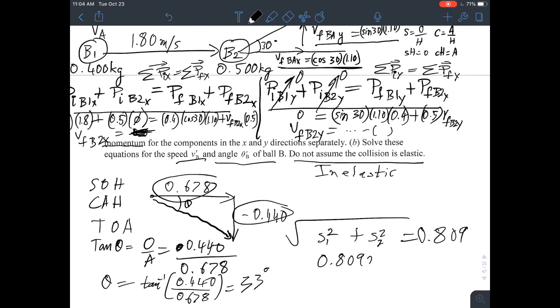So you can say, hey, it's 0.809 meters per second at 33 degrees below the positive x axis, and you're done.